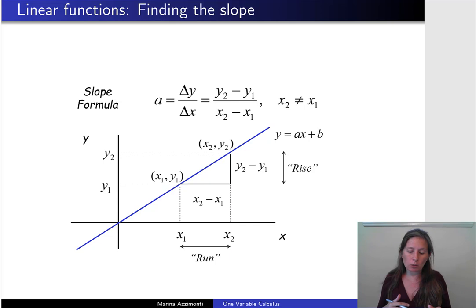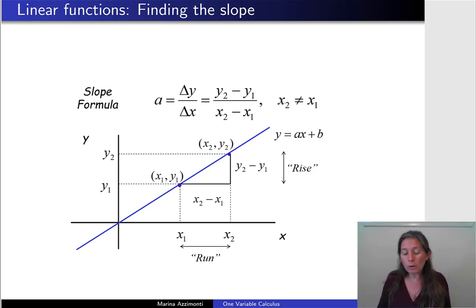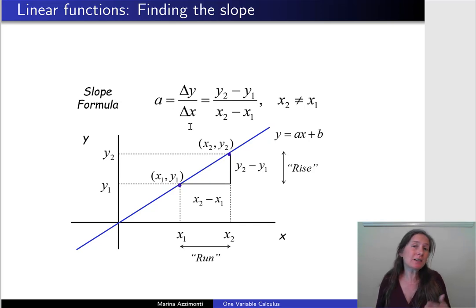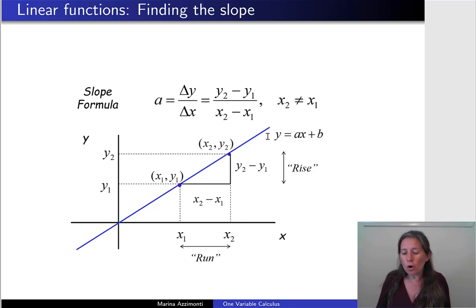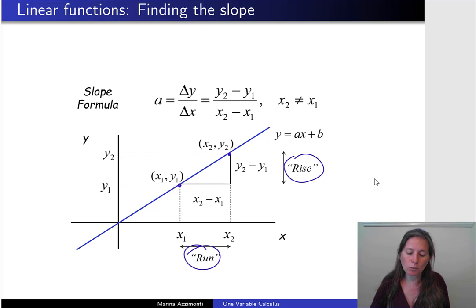Sometimes you don't have the equation of a function, but you know two values the function takes — two x's and two y's — and you can compute the slope just from these two coordinates. Remember, a is just the change in the dependent variable when you increase the independent variable. In a straight line, the slope is always constant, so you just need to know by how much y changes when x increases. If you grew up in the U.S., this is the ratio between the rise and the run: rise is y2 minus y1, and run is x2 minus x1.